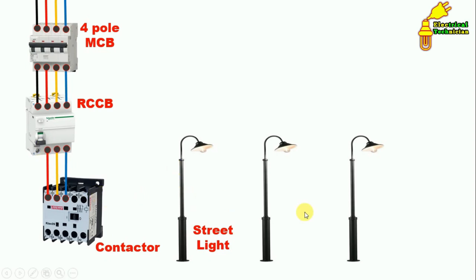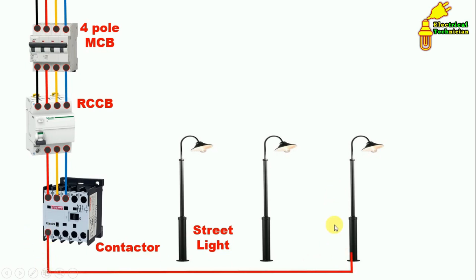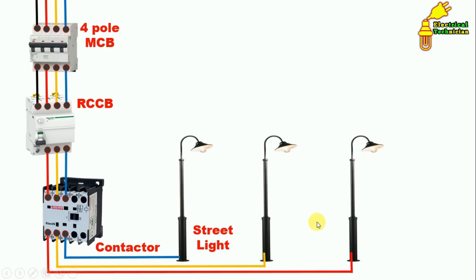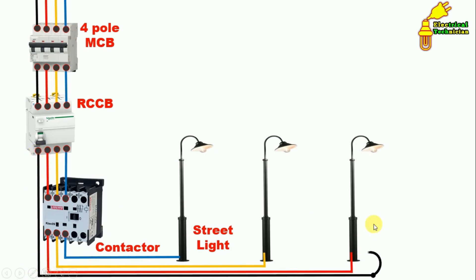To these three street lights, I am providing one phase supply each. To the first street light I connected R phase, to the second street light I connected Y phase, and to the third street light I connected B phase. For neutral supply, connect one wire from the neutral point to each street light. Neutral supply is connected to all three street lights.